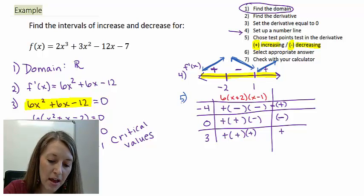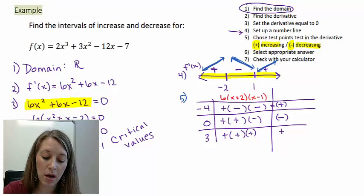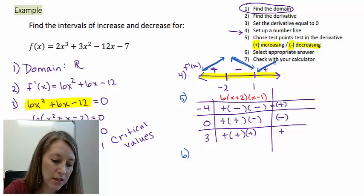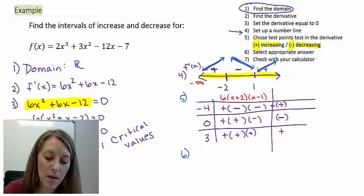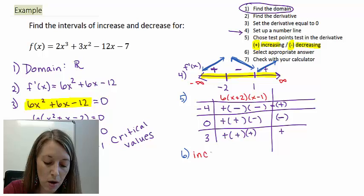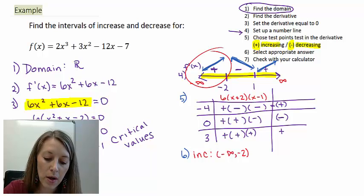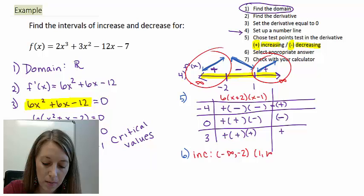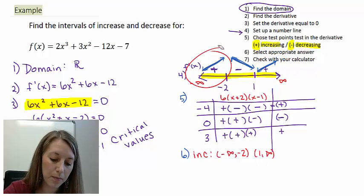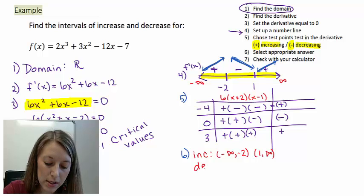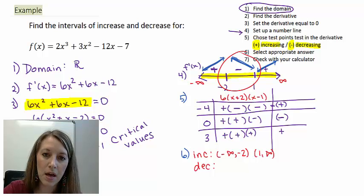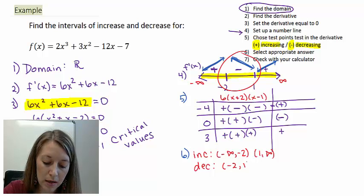That was step five — test points on our intervals. Step six is taking out the answers. The very left of the number line is negative infinity and the right is positive infinity. Increasing is where the graph is going up: from negative infinity to negative 2, and from 1 to infinity. Decreasing is where the graph is going down: that's happening between negative 2 and 1.